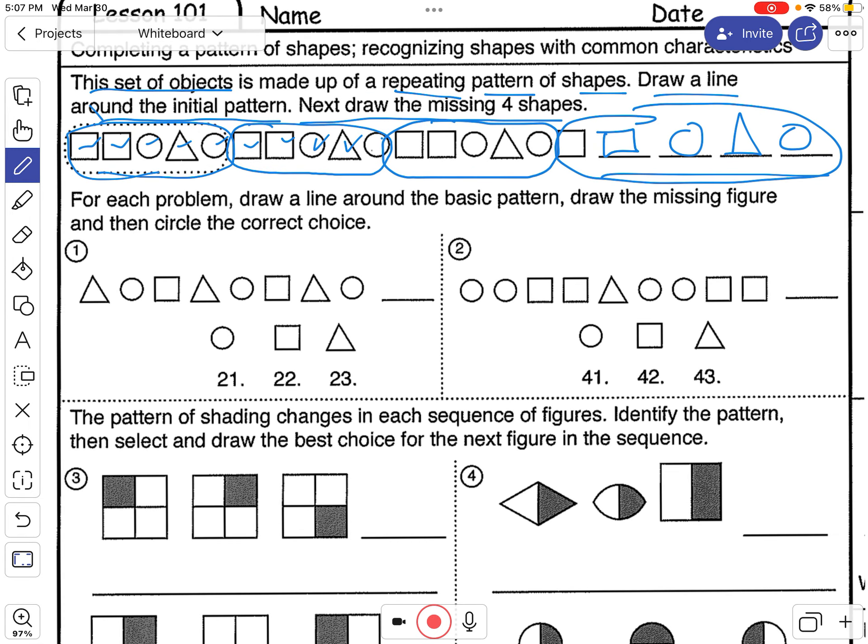All right, number one down here. For each problem, draw a line around the basic pattern, just like we did up here. Draw a circle around it. Draw the missing figure and then circle the correct choice.